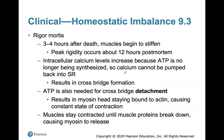Rigor mortis: about three to four hours after death, muscles begin to stiffen, with peak rigidity occurring about 12 hours after death. This occurs because ATP is no longer being made, so no calcium ions can be pumped back into the sarcoplasmic reticulum, resulting in constant crossbridge formation. ATP is also needed for the detachment of myosin from actin, keeping muscles in a constant state of contraction until muscle proteins eventually break down, causing myosin to release.